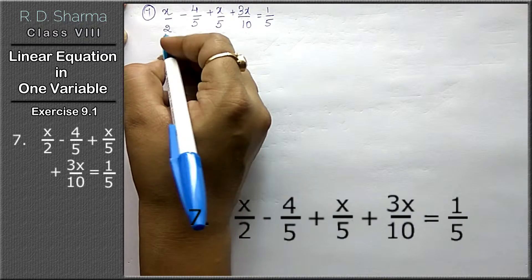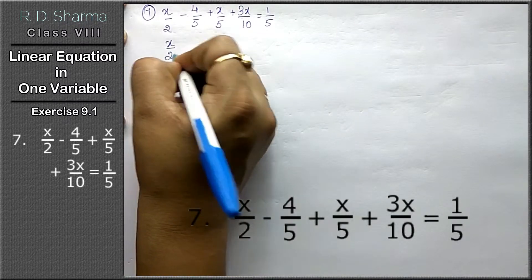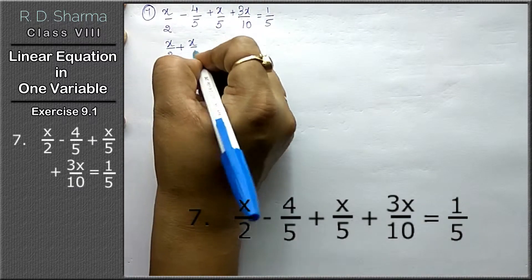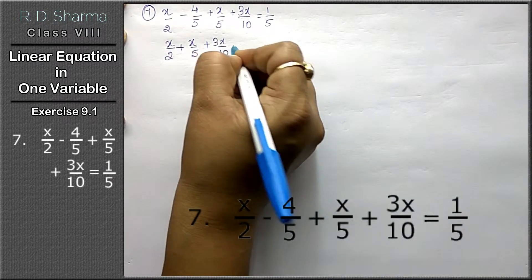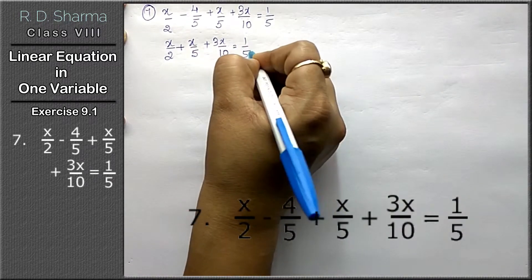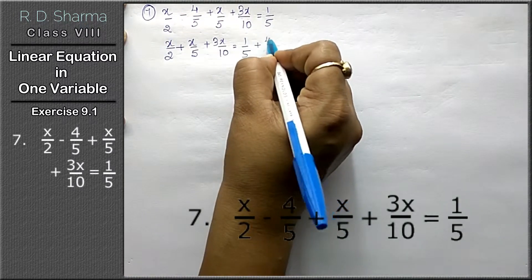Now we know that we have to put x terms on the left hand side and rest of the terms on right hand side. So 3x upon 10 equals to 1 upon 5, and the minus term will become plus on the other side.